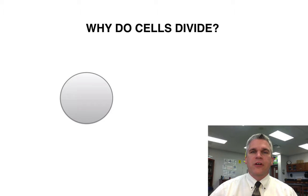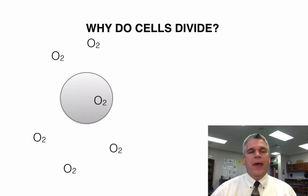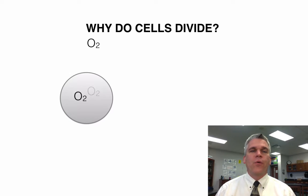Now since these cells are alive, they're going to need things like oxygen, and oxygen can pass right through the cell membrane and supply energy for the cells. As a byproduct, carbon dioxide is going to be released, and that needs to pass through the cell membrane as well. As a cell grows, however...